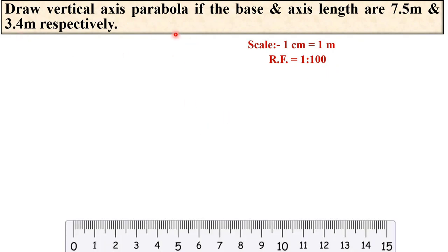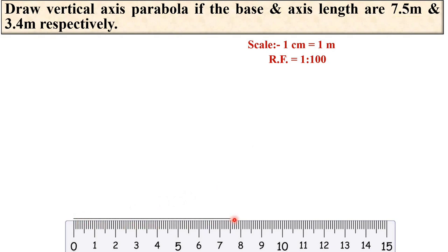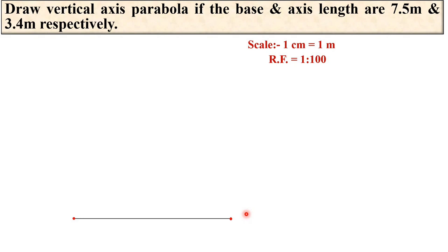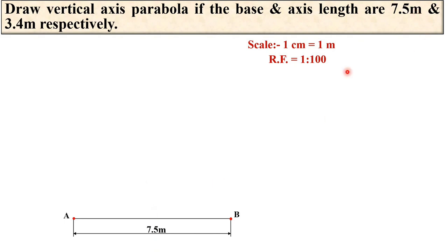First, draw the horizontal line. The base length is 7.5 meters, and with the scale of 1 meter equal to 1 centimeter, you draw the horizontal line as 7.5 centimeters. Mark the points and give the name AB. Keep in mind that in the drawing you must mention the actual dimension of the object, which is 7.5 meters.